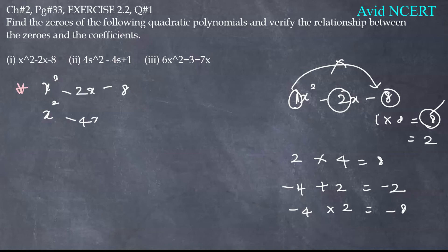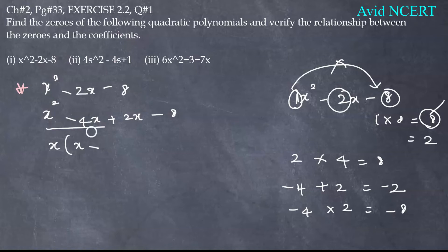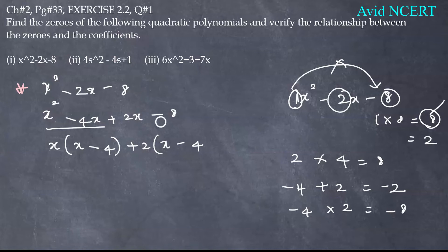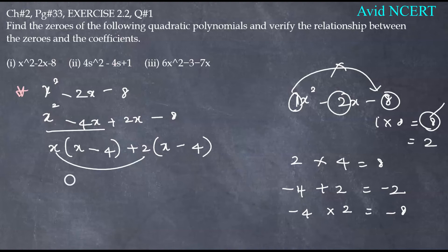Substituting, we get x squared minus 4x plus 2x minus 8. Taking x as common from the first two terms: x times (x minus 4). Then taking plus 2 as common from the last two terms: plus 2 times (x minus 4). Since (x minus 4) is common, this gives us (x plus 2)(x minus 4).